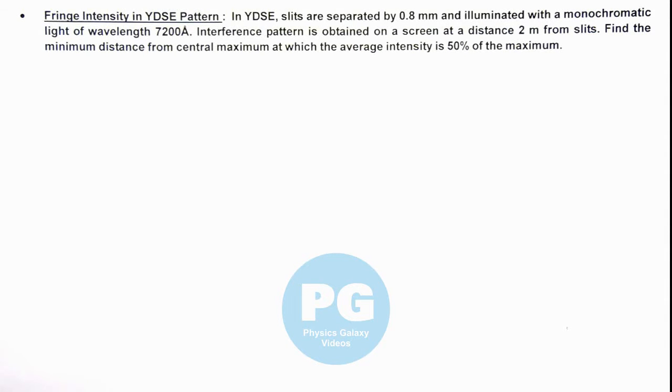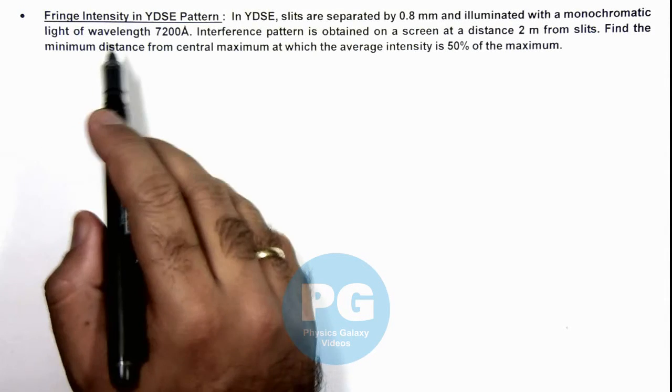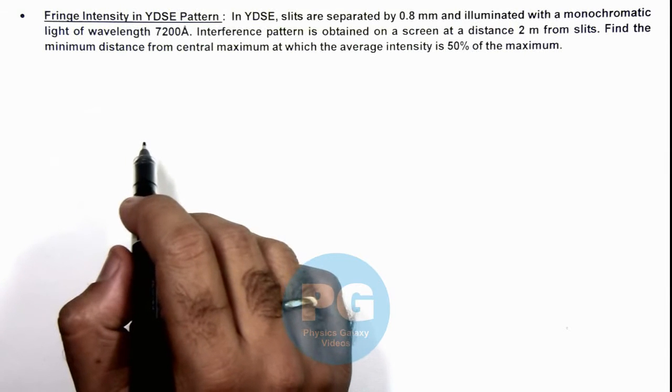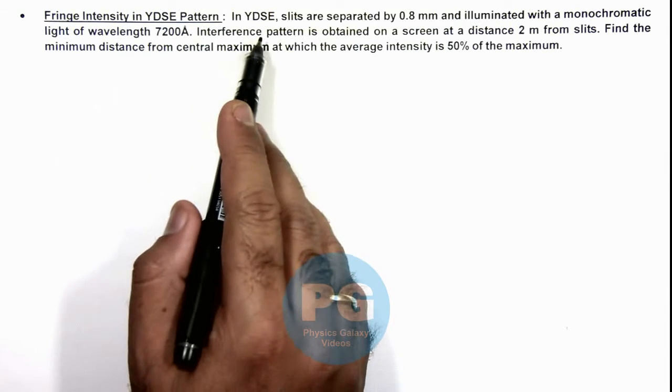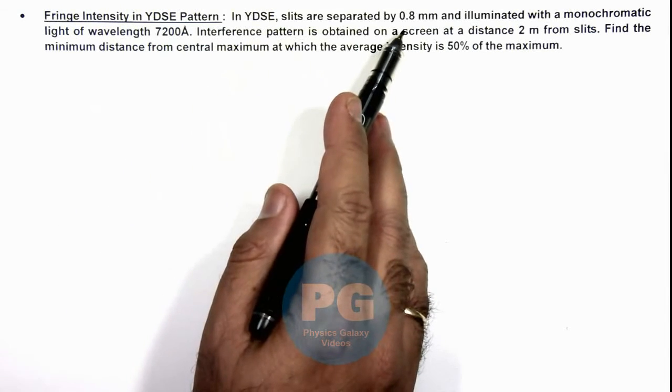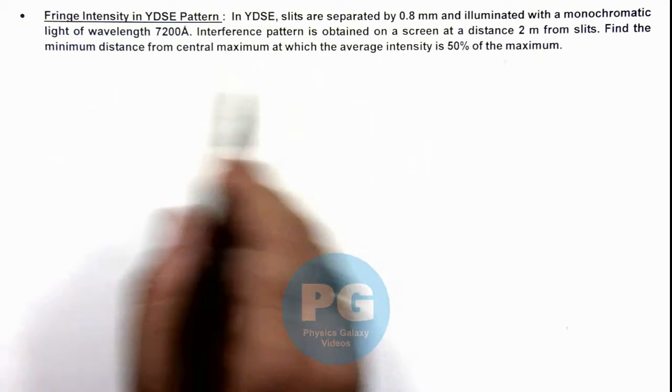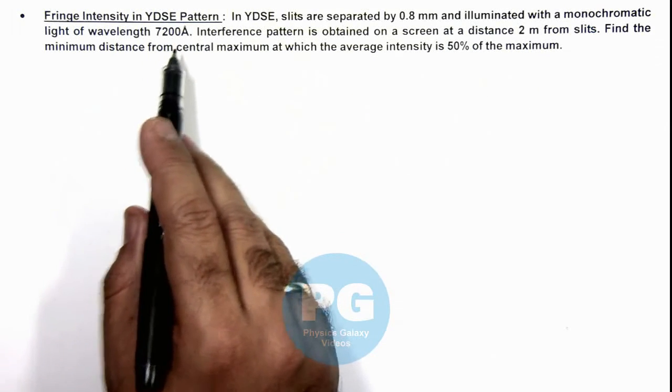In this illustration we'll analyze the fringe intensity in YDSE pattern. Here we are given that in YDSE, slits are separated by 0.8 mm and illuminated with a monochromatic light of wavelength 7200 angstrom.